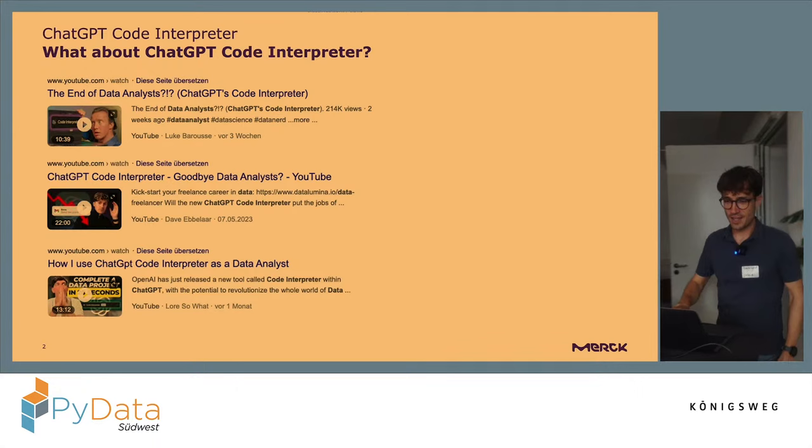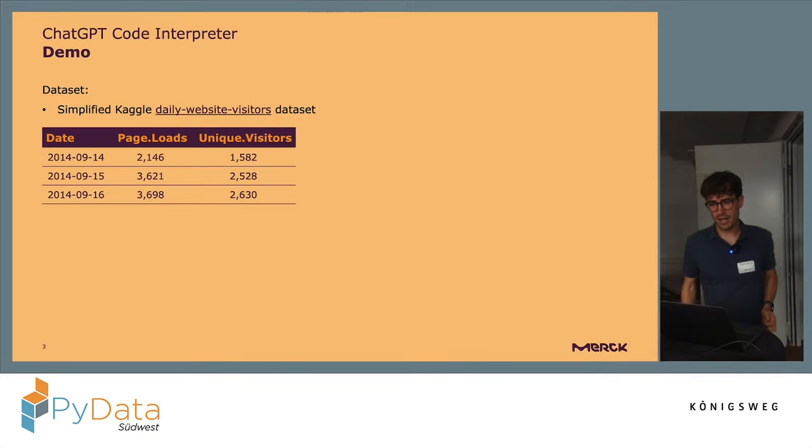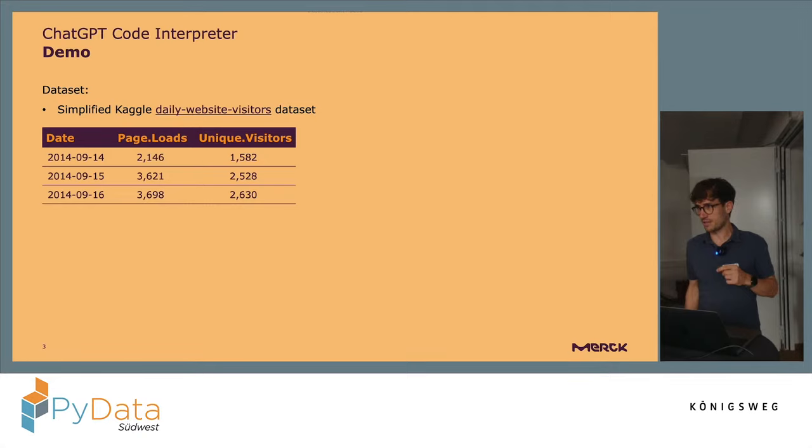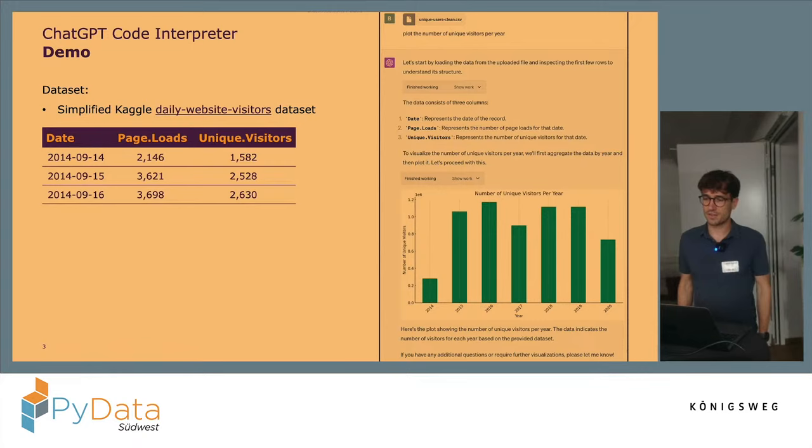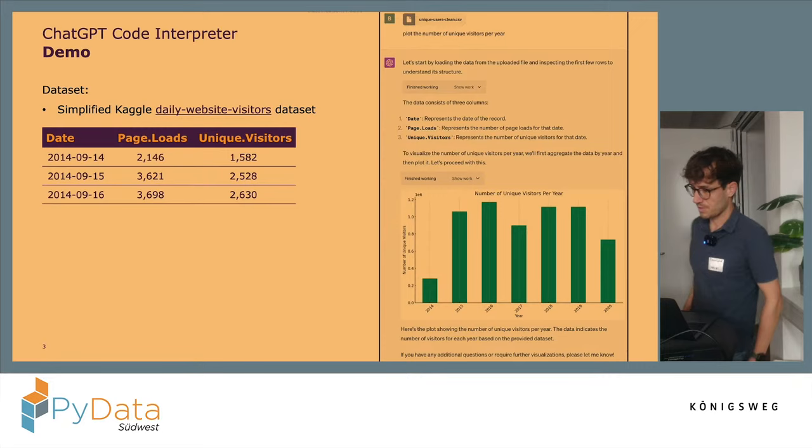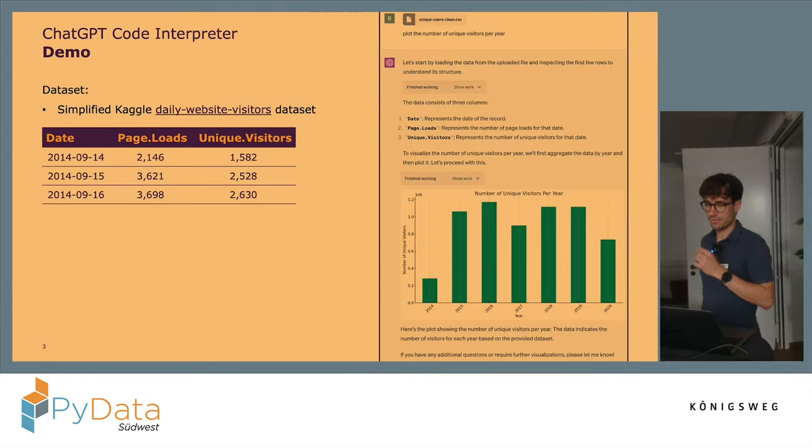I thought I'd give this a try myself. So I created a simplified version of a dataset I found on Kaggle. This dataset tracks the page loads and unique visitors for each day. I uploaded this CSV to Code Interpreter and asked it to plot the number of unique visitors per year. Code Interpreter loaded and inspected the CSV, generated Python code, aggregated the unique visitors by year, and produced a Matplotlib chart.